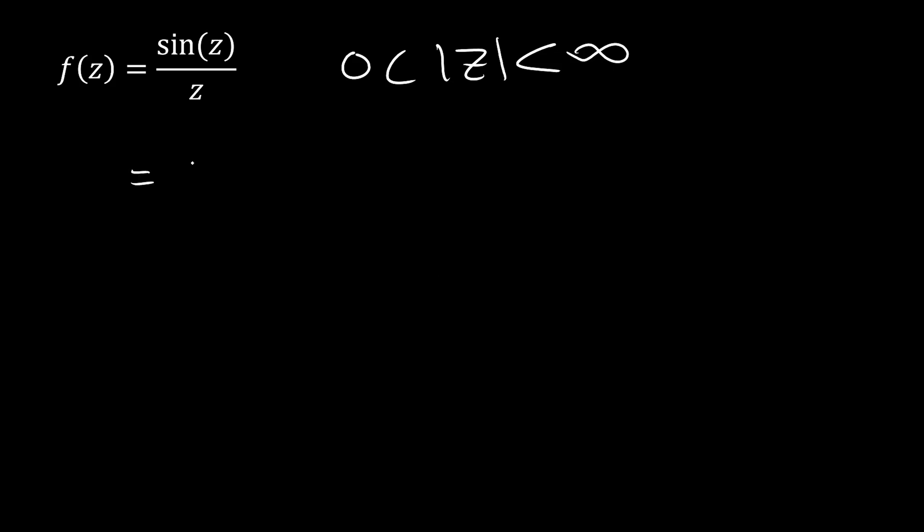What we're going to do is pull out our 1 over z and expand our sine out, which is going to be z minus z cubed over 3 factorial plus z to the 5th over 5 factorial minus z to the 7th over 7 factorial and so on. Laurent series that we know of, we can add to them, multiply term by term, subtract and divide by them term by term. So let's do that with this 1 over z.